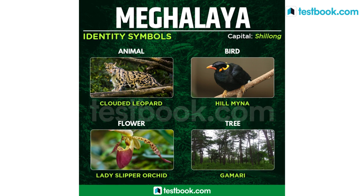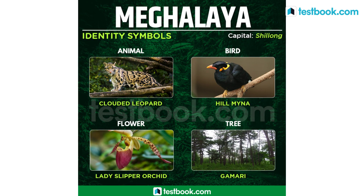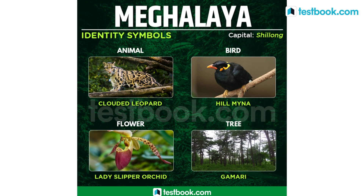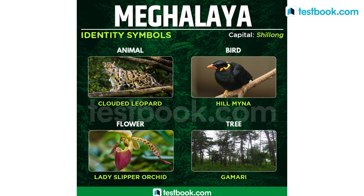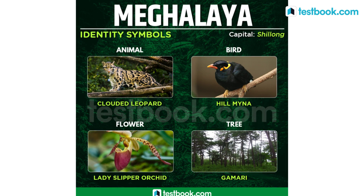Clouded Leopard is the state animal for Meghalaya, state bird is Hill Myna, state flower is Lady Slipper Orchid and state tree is Gamari.